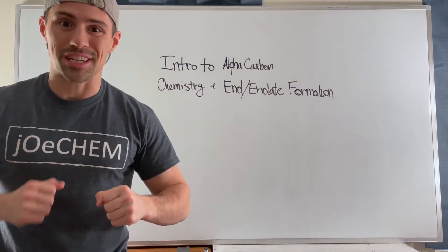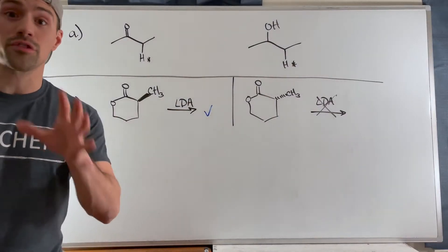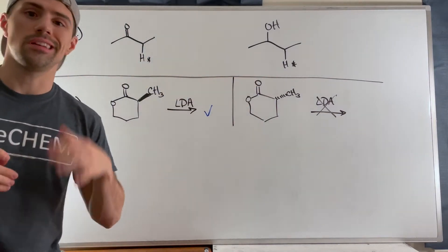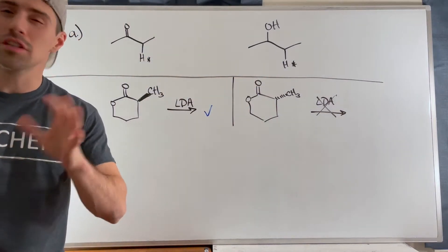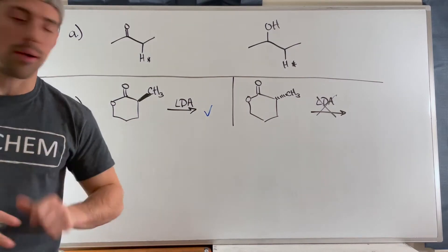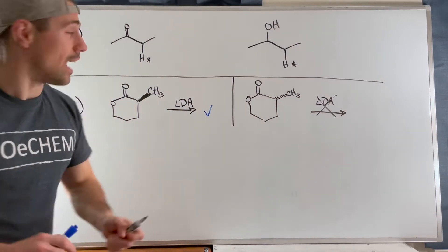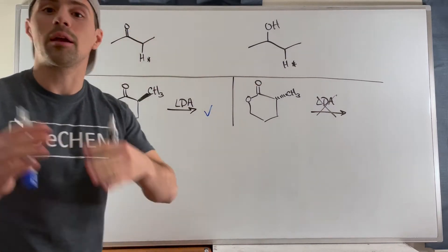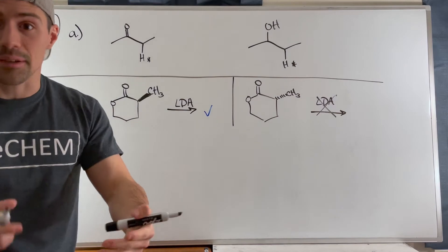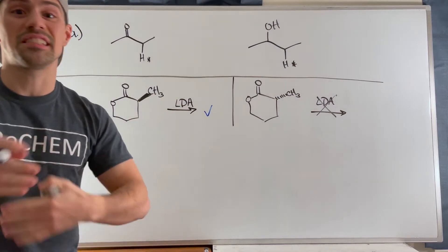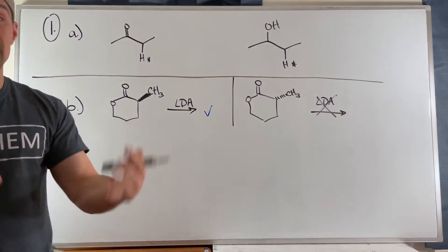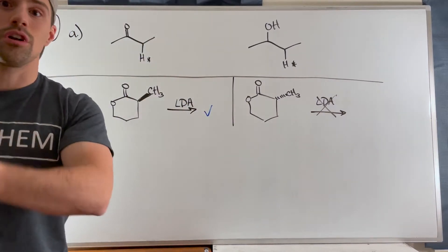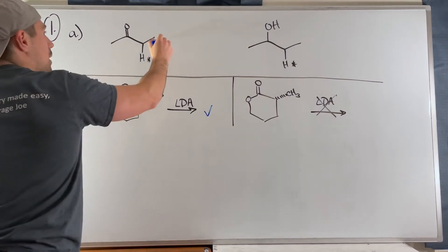In problem one, part A, we are given two structures and we need to indicate which hydrogen is more acidic and explain why. This one's pretty straightforward. What always helps us compare and evaluate acidity is to look at the conjugate base and see how stable it is, because if the conjugate base is really stable and weak, that means it came from a much stronger acid.